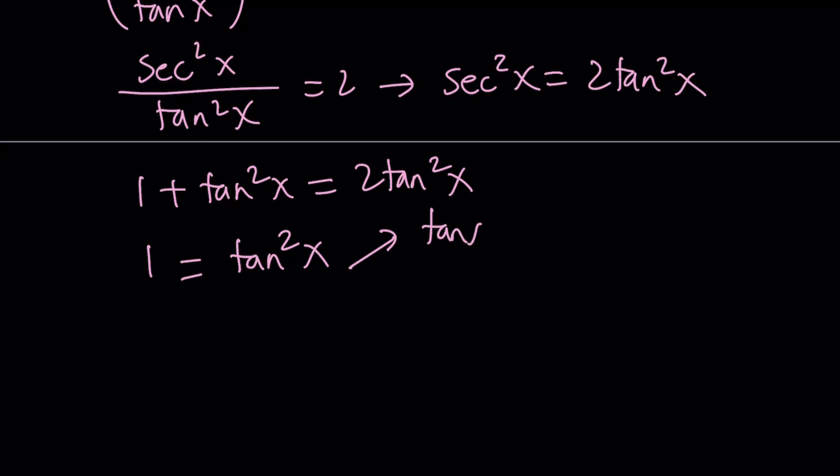And this has two results. Either tangent x is equal to 1 or tangent x is equal to negative 1. So let's go ahead and take a look at the possible solutions. If tangent is 1, that means x is 45 degrees or pi over 4 radians.